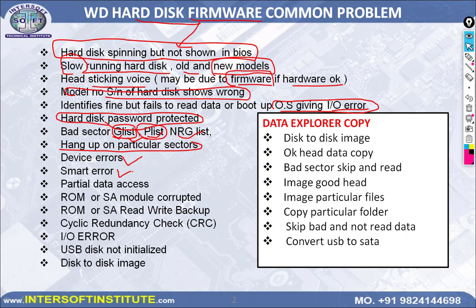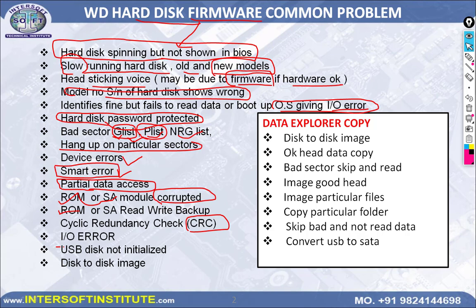SMART is a log that records how many bad sectors exist, how long the hard disk has run, and all errors. Resetting SMART resets the counter to zero. Partial data access means some heads are reading and some are not. ROM file or service area module damage can be repaired or the module can be shifted. CRC errors, I/O errors, USB disk not initialized, and disk-to-disk imaging are all things we can do with firmware tools.